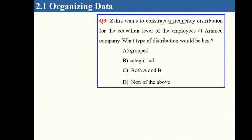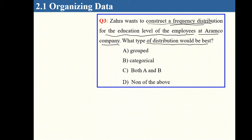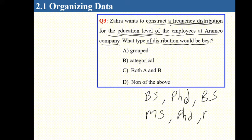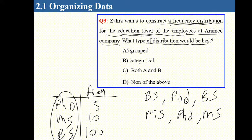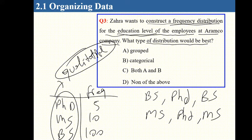Zahra wants to construct a frequency distribution for the education level of employees at Aramco company. She will collect raw data like PhD, MS, BS degrees. Since education level is a qualitative variable, we use categorical frequency distribution.